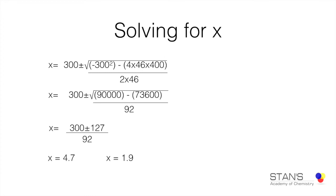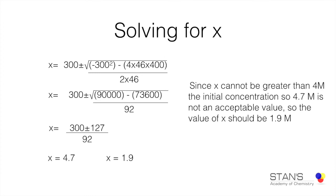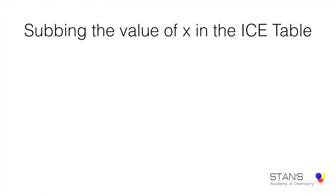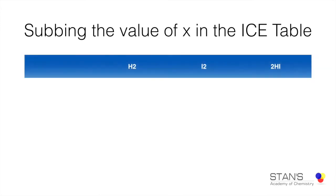So we will go with X = 1.9 moles per liter. We will now substitute this value into the ICE table to obtain the actual equilibrium concentrations.